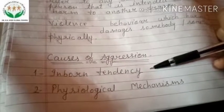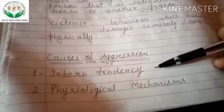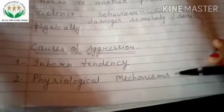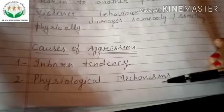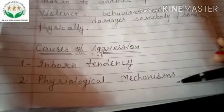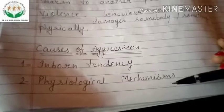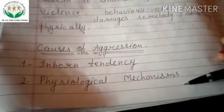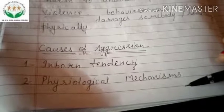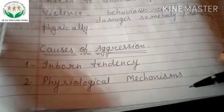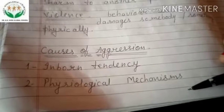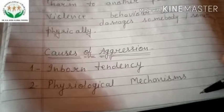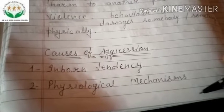The causes of aggression: the first is inborn tendency — aggressiveness is an inborn tendency among human beings; biologically, this inborn tendency may be meant for self-defense. The second is physiological mechanism — aggression can be indirectly triggered by physiological mechanisms, especially by the activation of certain parts of the brain that play a role in emotional experience. A general physiological state of arousal might often be expressed in the form of aggression, for example resulting from a sense of crowding especially in hot and humid weather.